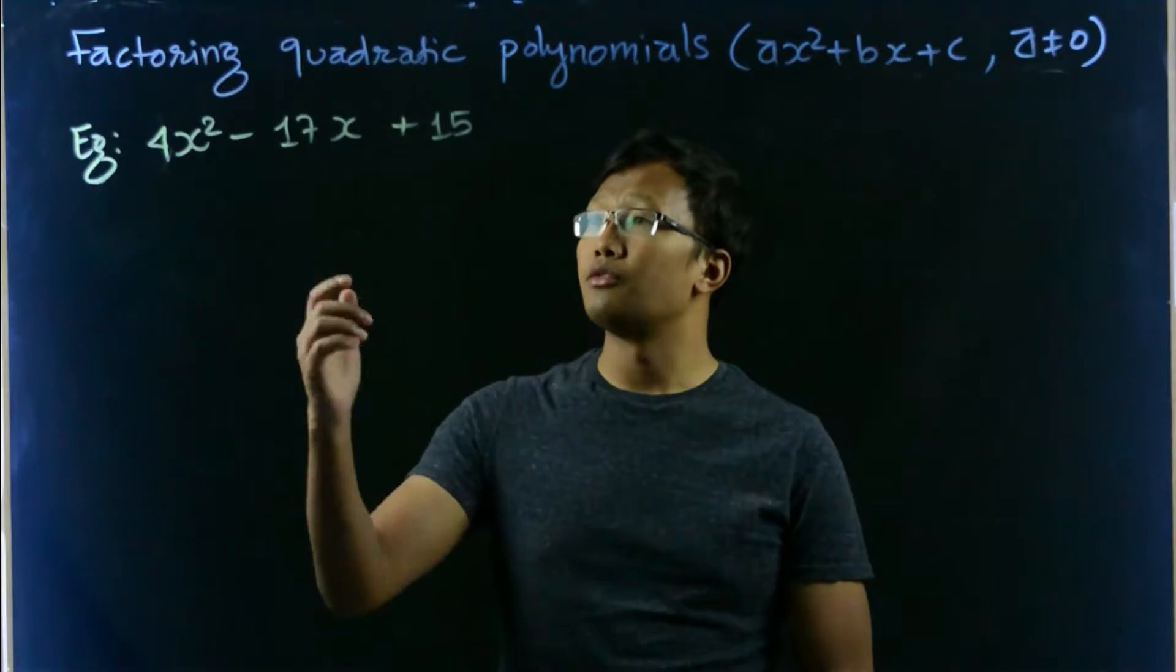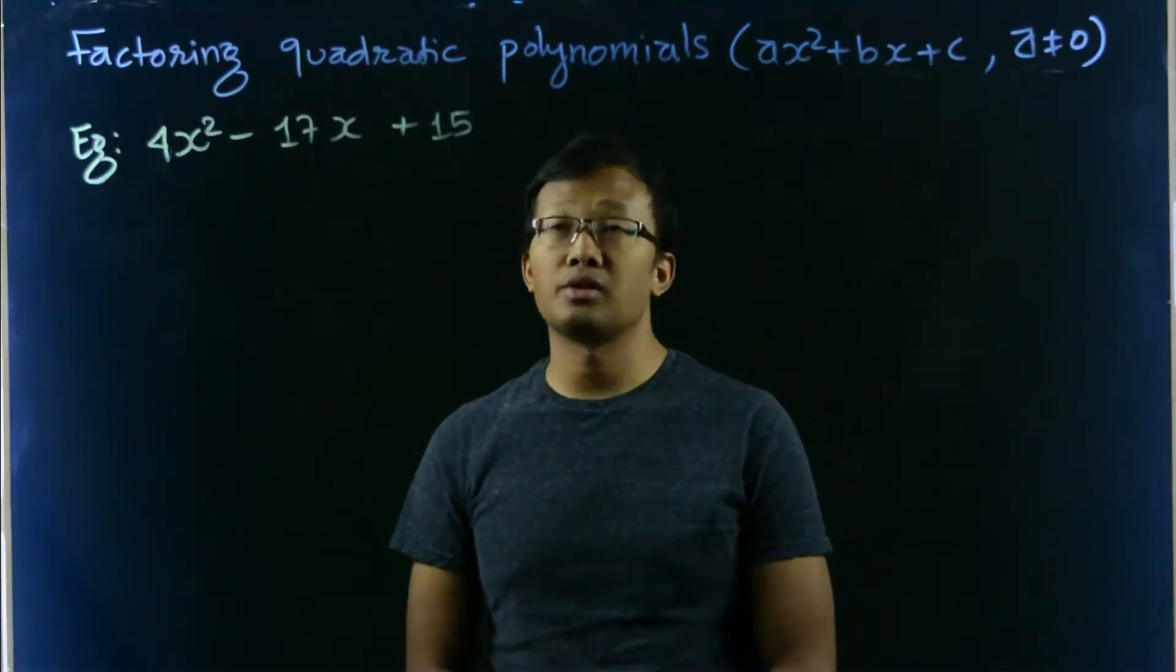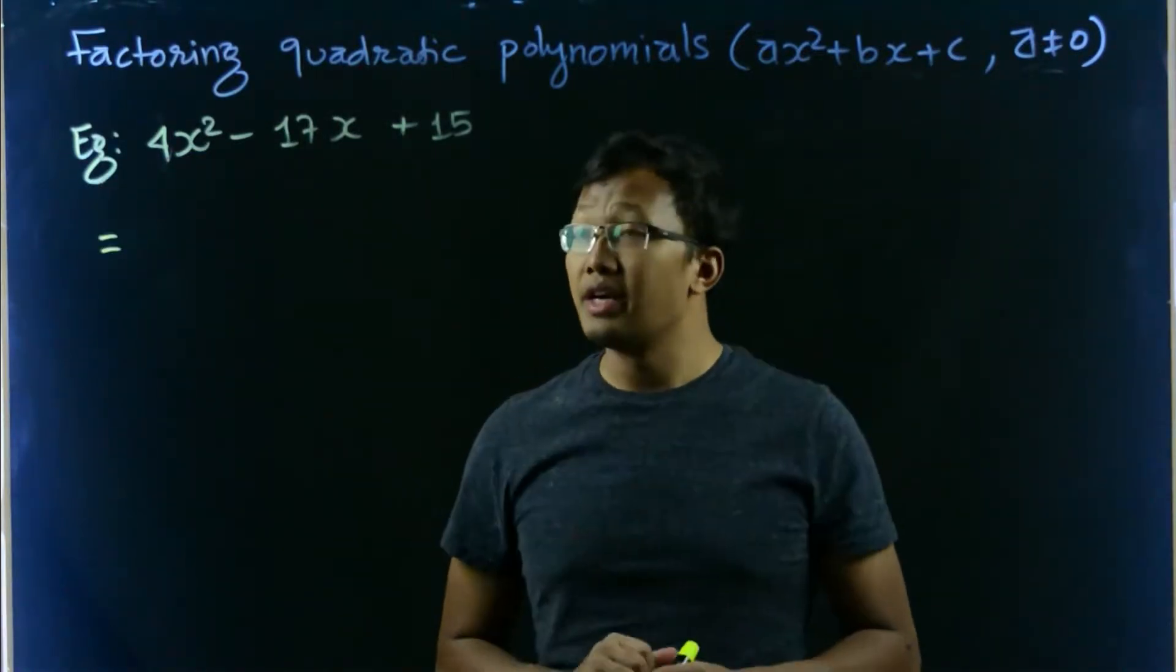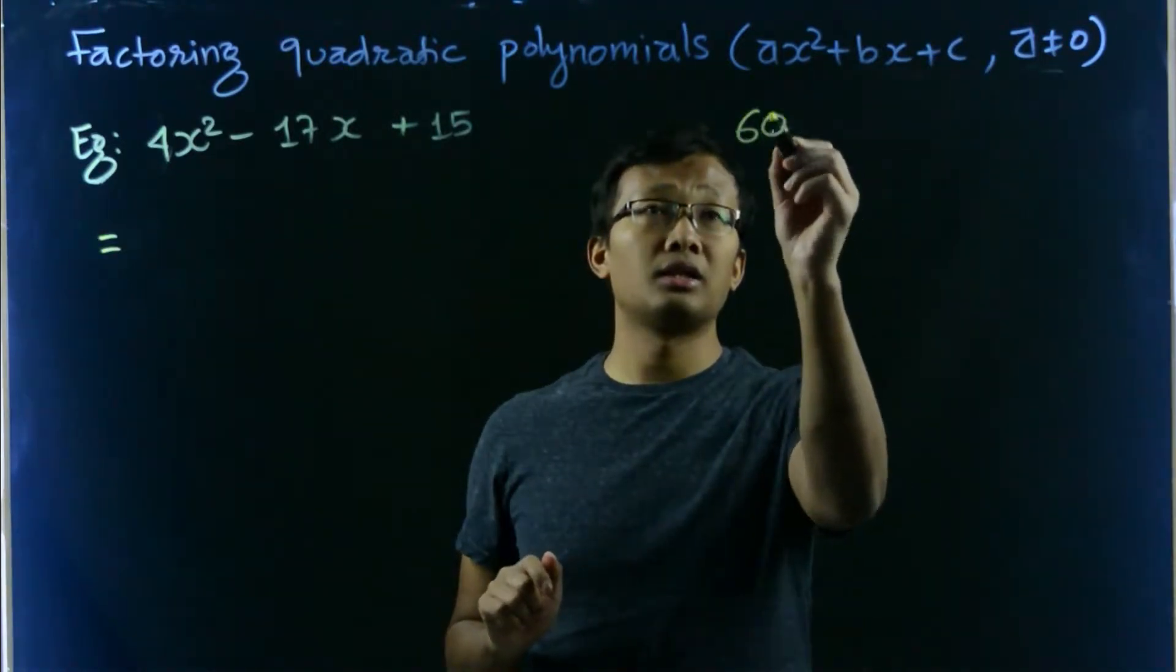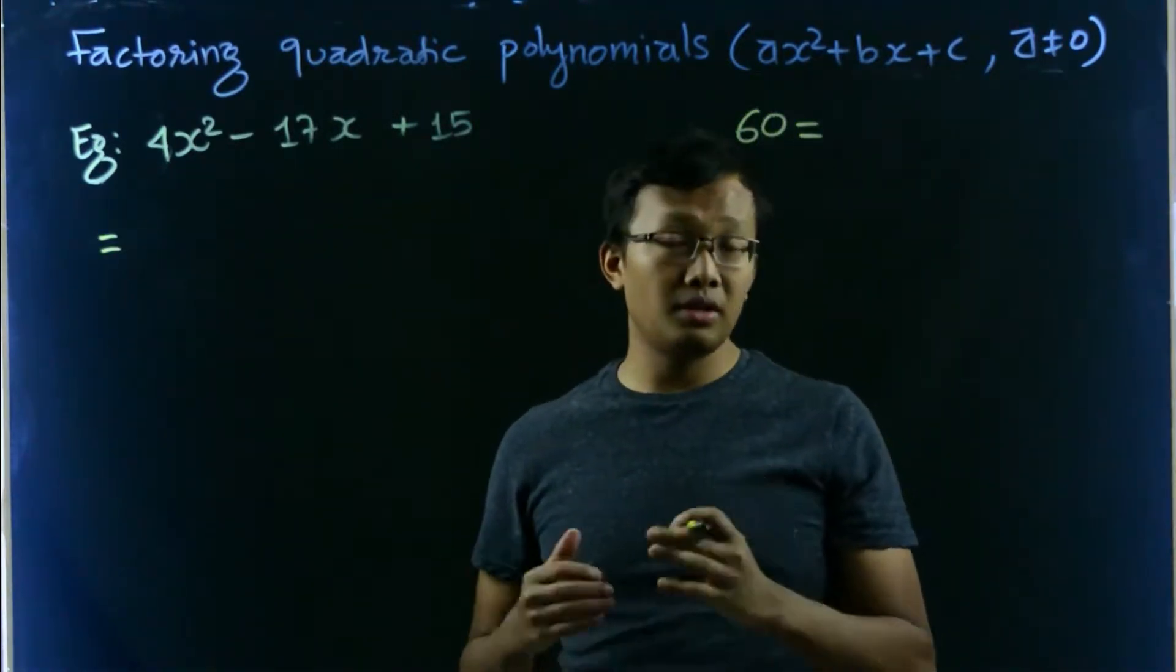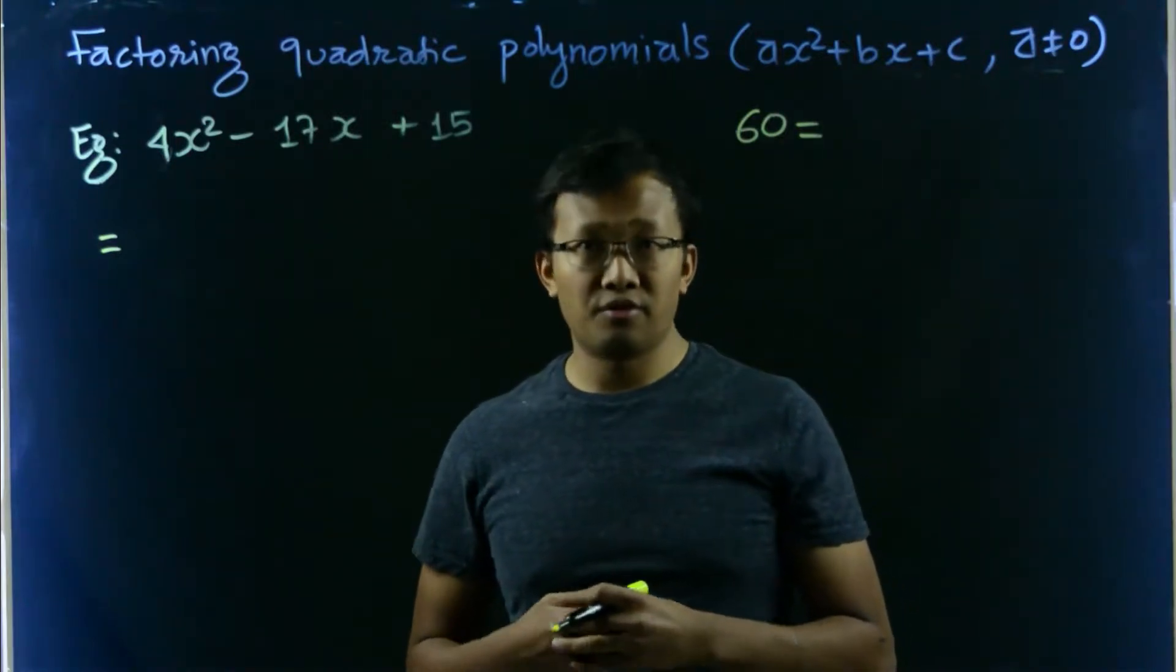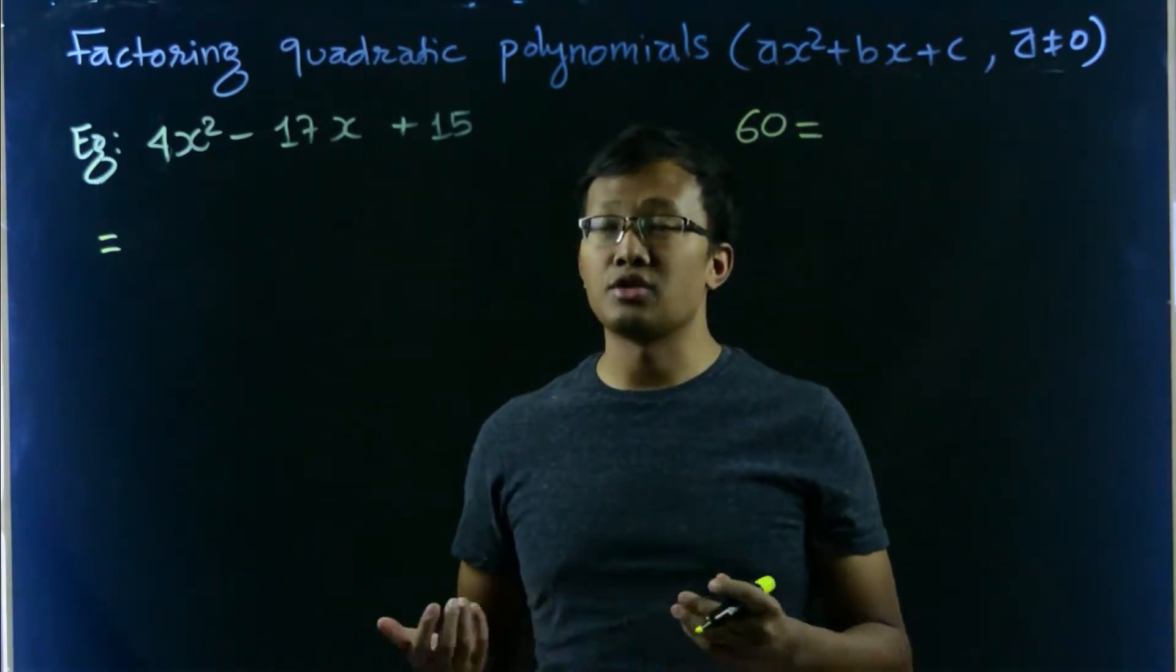Let's take an example: 4x squared minus 17x plus 15. Here we know that 15 times 4 is 60, and 60 can be factored out in different ways, various ways.